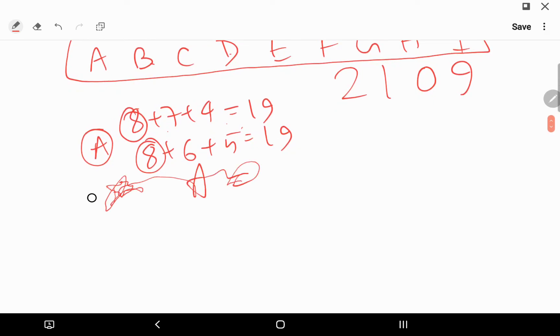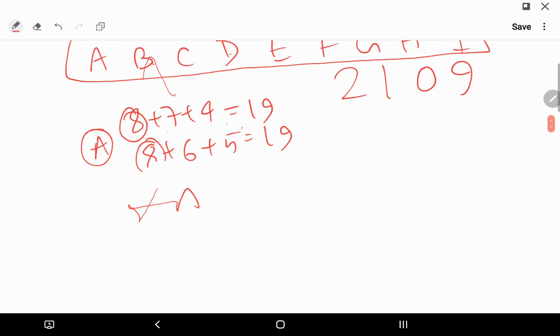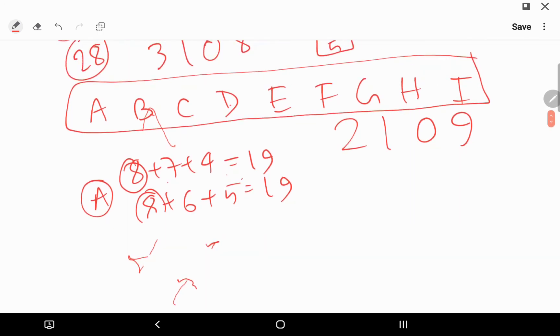A is definitely 8. B, C can be 7, 4 or D, E can be 6, 5. Or D, E can be 7, 4 and B, C can be 6, 5. So this is the answer. A is definitely 8.